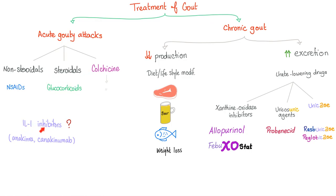Some people are trying to use interleukin-1 inhibitors such as anakinra and canakinumab to treat gout — we'll see if it works. For chronic gout, decrease production through diet and lifestyle modification: decrease your intake of meat, beer, and seafood; try to lose weight; and try to manage hypertension.